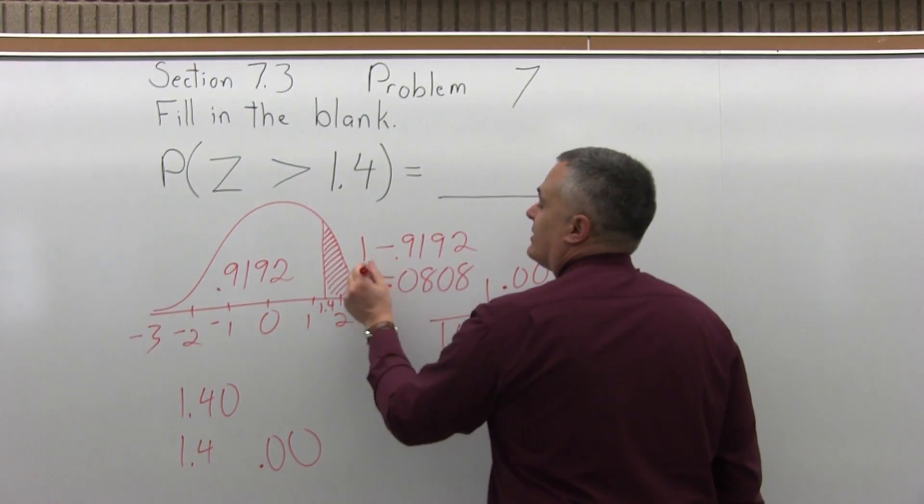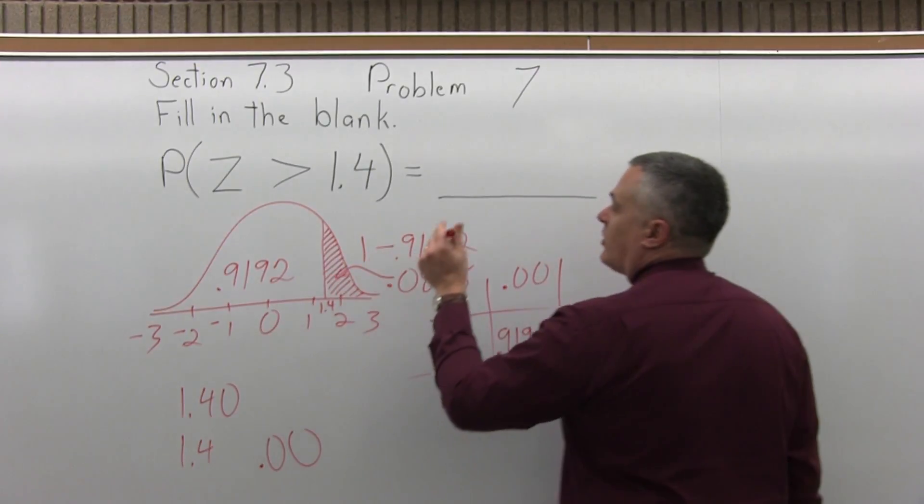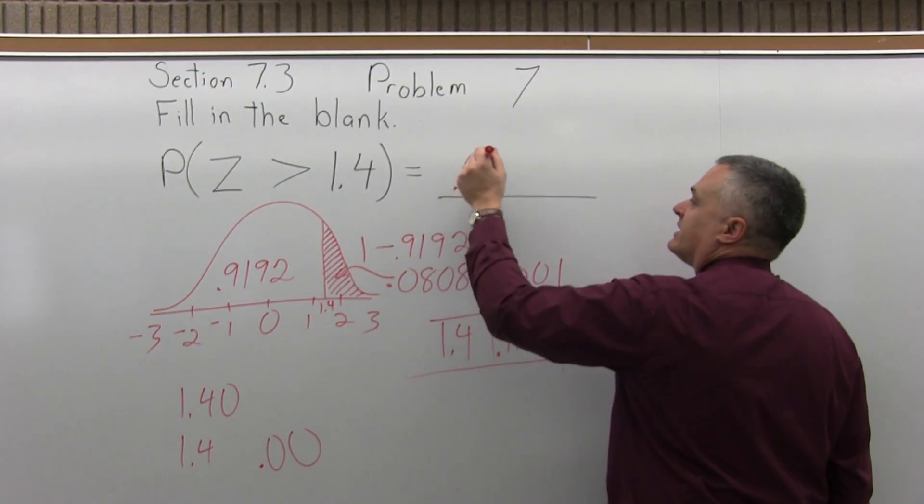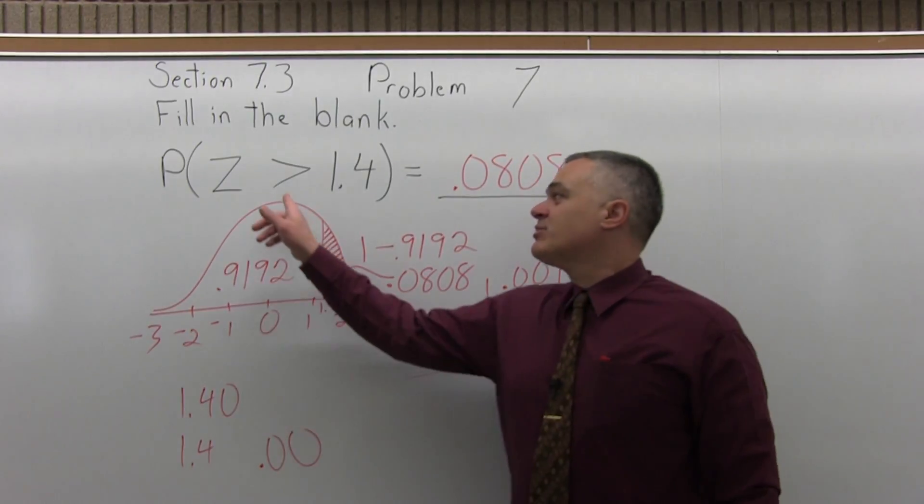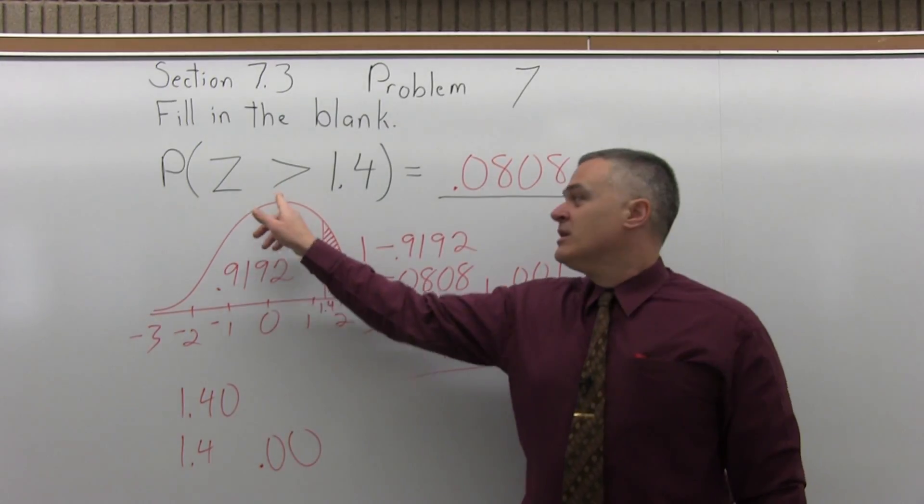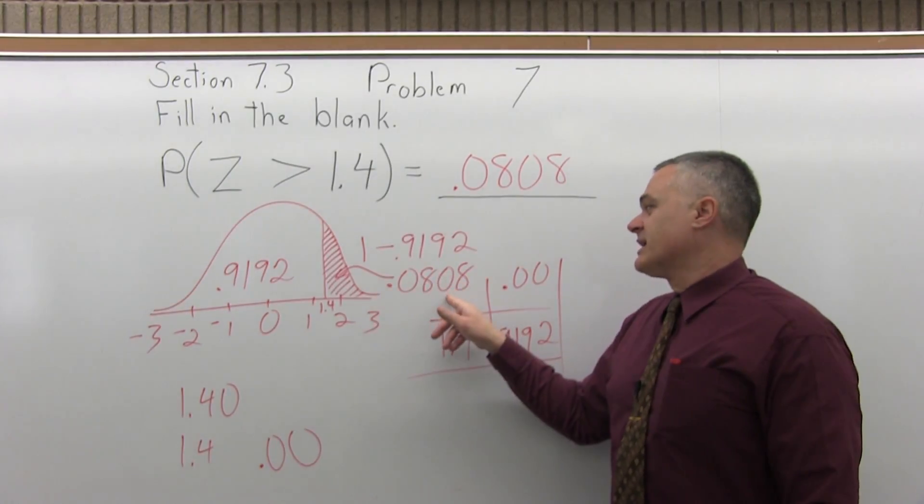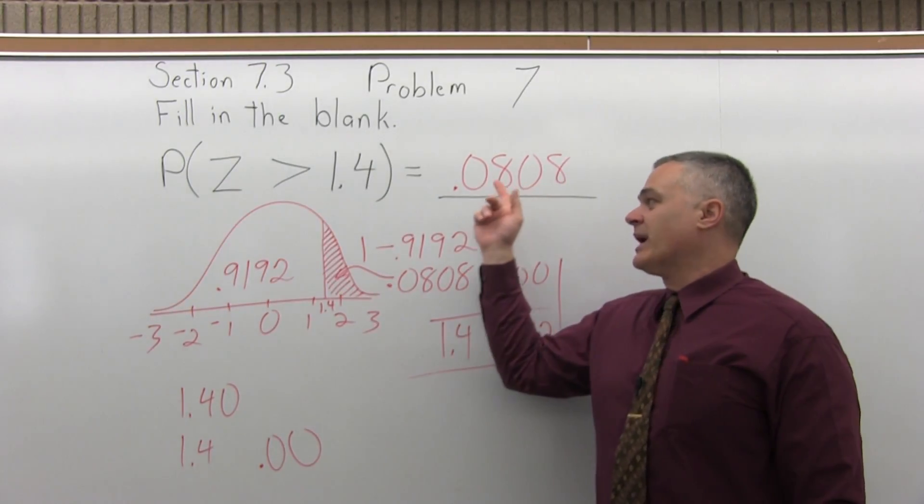So that's the shaded area, the area that I want. So to fill in the blank, we fill it in with .0808. In general, any one of these probability questions that has a greater than will be 1 minus the chart value. And in this particular case, the answer comes out to .0808. So the probability that z is greater than 1.4 is equal to approximately an 8% probability.